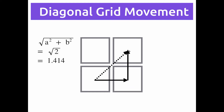Moving from here to here, if you take this step in the same amount of time as you take this step, then you're moving around 40% faster when you go diagonal. So it's quicker to get somewhere moving diagonally than it is moving horizontally and vertically. We need a way to compensate for that and make the cost of diagonal movement higher than the cost of moving horizontally and vertically.